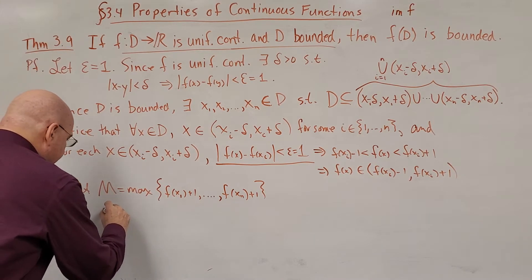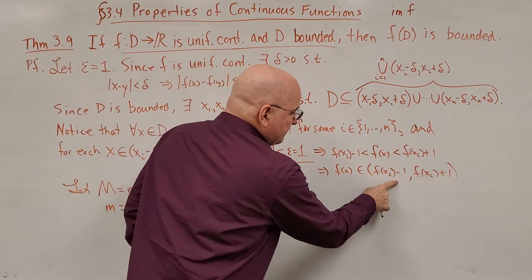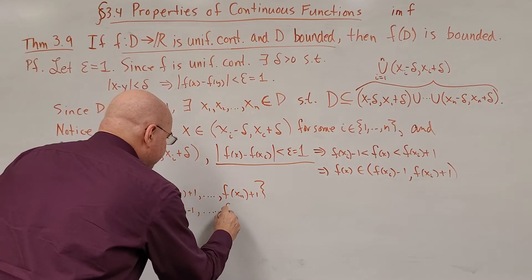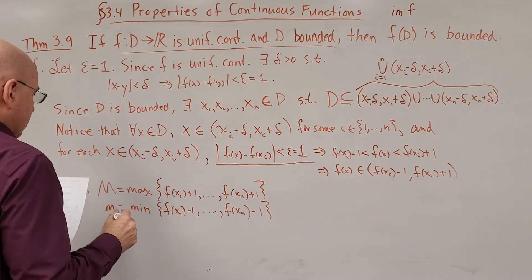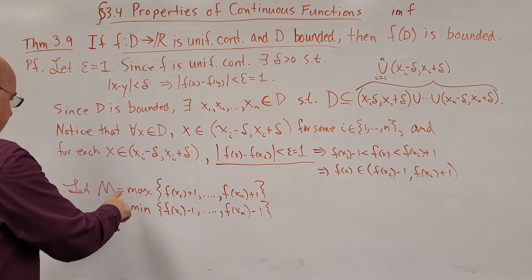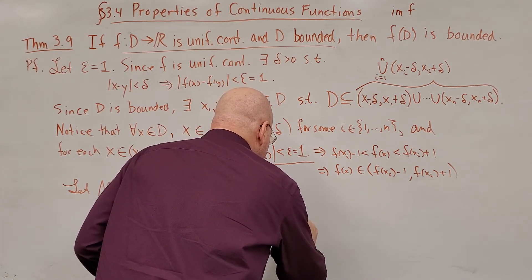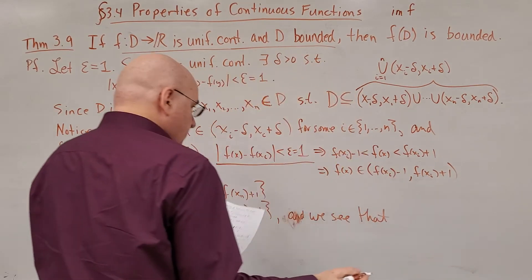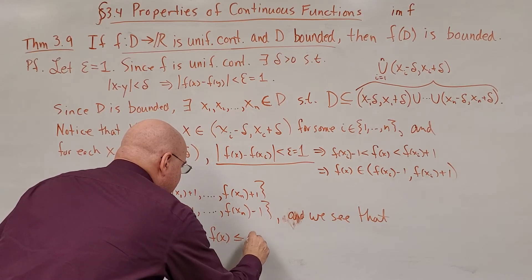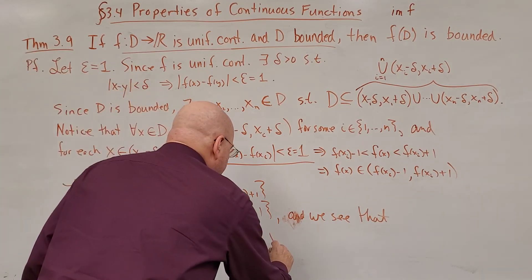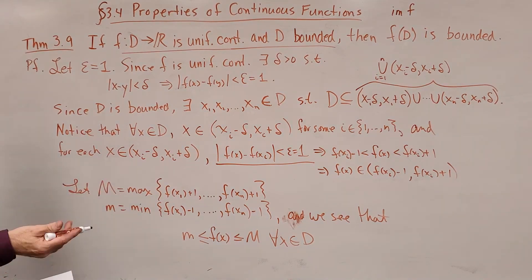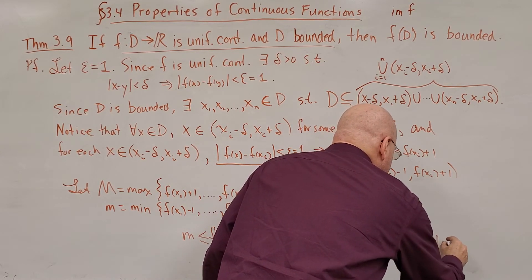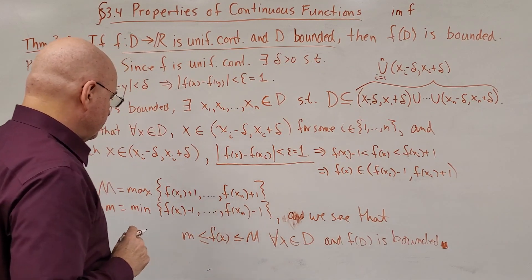And I'm going to define, I'll use little m to be the minimum of the lower bound of the intervals, f(xᵢ) - 1. So f(x₁) - 1 all the way up to f(xₙ) - 1. By doing that, let capital M be the max, let m be the min, we see that f(x) is less than or equal to capital M, greater than or equal to little m for all x in the domain, and therefore f(D) is bounded. And that's the end of the proof.